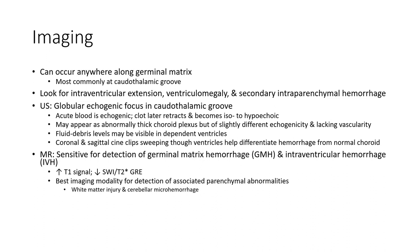Imaging: Germinal Matrix Hemorrhage can occur anywhere along the germinal matrix. Most common location is at the caudothalamic groove. Look for intraventricular extension, ventricular colpomegaly, and secondary intraparenchymal hemorrhage. Appears as an asymmetric globular echogenic focus in the caudothalamic groove.